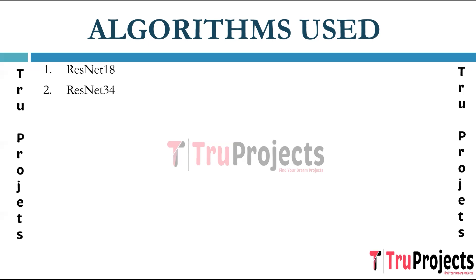ResNet34 is another variant of ResNet architecture consisting of 34 layers. Similar to ResNet18, it incorporates residual blocks with a deeper architecture. ResNet50, which is the backbone of SSCLNet, is a deeper variant of ResNet featuring 50 layers. It introduces additional residual blocks and is known for its superior performance in capturing intricate features.